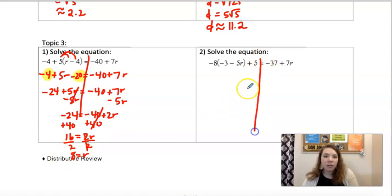Number 2 over here. Same kind of thing. We'll distribute first. That will give us positive 24 plus 40r. You want to make sure you're not making sign errors. Then we'll combine like terms. 24 and 5 is 29.